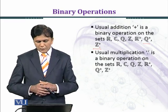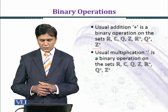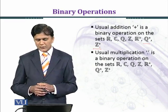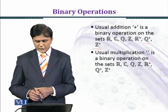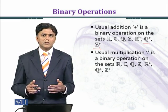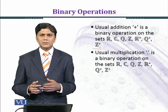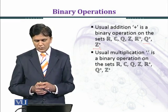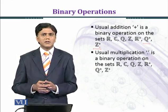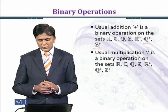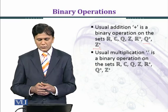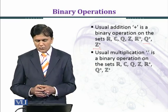Usual multiplication is also a binary operation on the sets of real numbers, complex numbers, rational numbers, and integers. When you multiply two complex numbers you get a complex number, and when you multiply two integers you get an integer. So multiplication is a binary operation on Z, Q, C, and R.